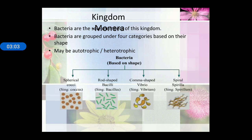Kingdom Monera: bacteria are the sole members of this kingdom. Bacteria are categorized on the basis of shape. Spherical shape bacteria are known as cocci; rod-shaped bacteria are bacilli; comma shape is vibrio; and spiral shape is spirillum.